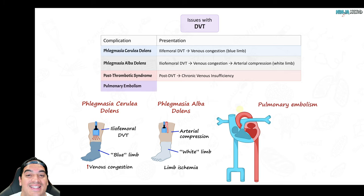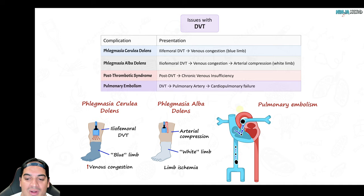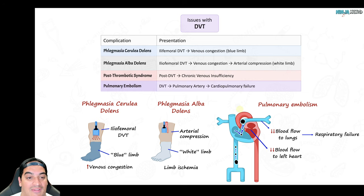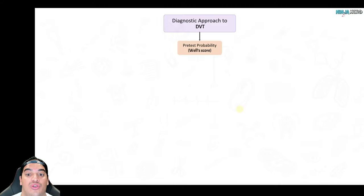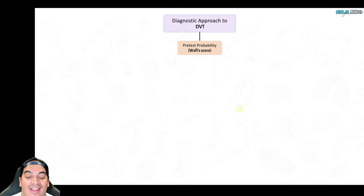The scariest complication of a DVT is if the clot pops off, travels up through the right atrium, right ventricle, and into the pulmonary artery — causing a pulmonary embolism. This leads to decreased blood flow to the lungs causing pulmonary failure, and less blood leaving the heart potentially causing heart failure and shock. To diagnose a DVT, look for leg swelling, edema, and a positive Homan's sign in a patient with features of Virchow's triad.